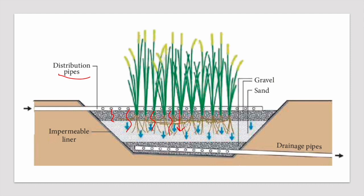Unlike the horizontal flow constructed wetland where flow moves horizontally, here we have a vertical flow of wastewater treated through the media and by the rhizomes of the reeds. The treated water is then collected through the drainage pipes and can be safely disposed if it meets local regulations, or further treated through tertiary treatment such as UV treatment or chlorination.